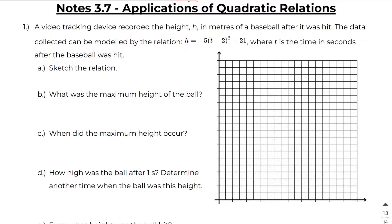In question number one, it says a video tracking device recorded the height h in meters of a baseball after it was hit. The data collected can be modeled by the equation h equals negative 5 times t minus 2 quantity squared plus 21, where t is the time in seconds after the baseball was hit. This is vertex form — in the form y equals a times x minus h quantity squared plus k — and we know that our vertex is going to be at (2, 21).